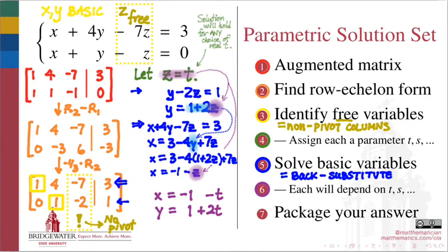Now that all the hard work is done, package your answer by remembering that your free variables need to be part of the solution as well. So in addition to knowing that x is negative 1 minus t and y is 1 plus 2t, I also need to remember that z itself is equal to t.